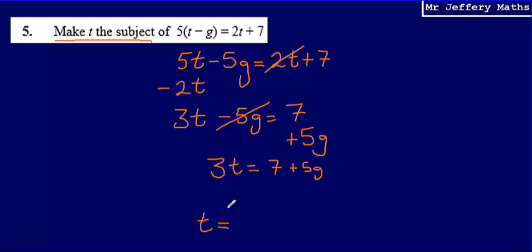Then the final thing that's left for me to do, in order to get from 3t to just t, I'm going to have to get rid of this multiply by 3 by dividing both sides of my formula by 3. So that leaves me with 7 plus 5g, all divided by 3. So final answer, t is equal to 7 plus 5g divided by 3.